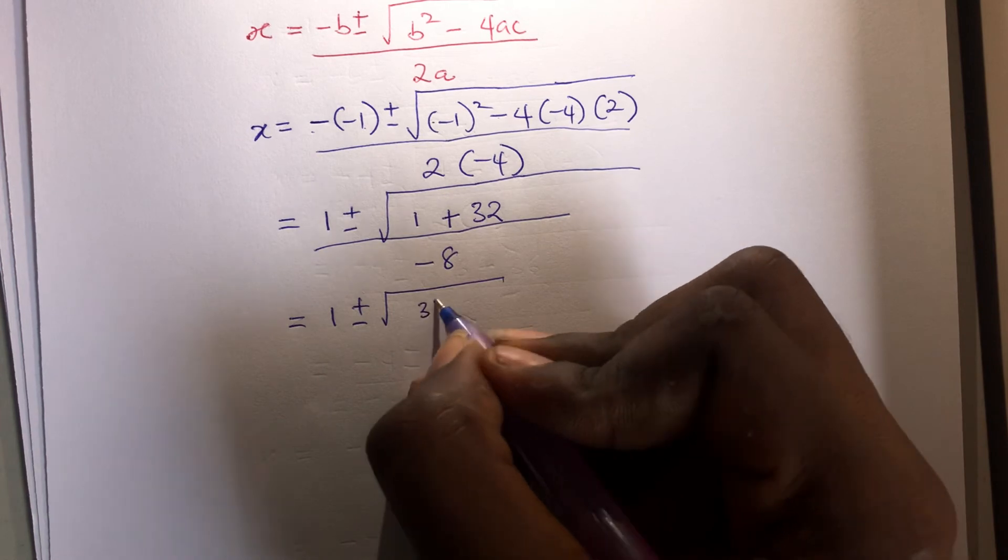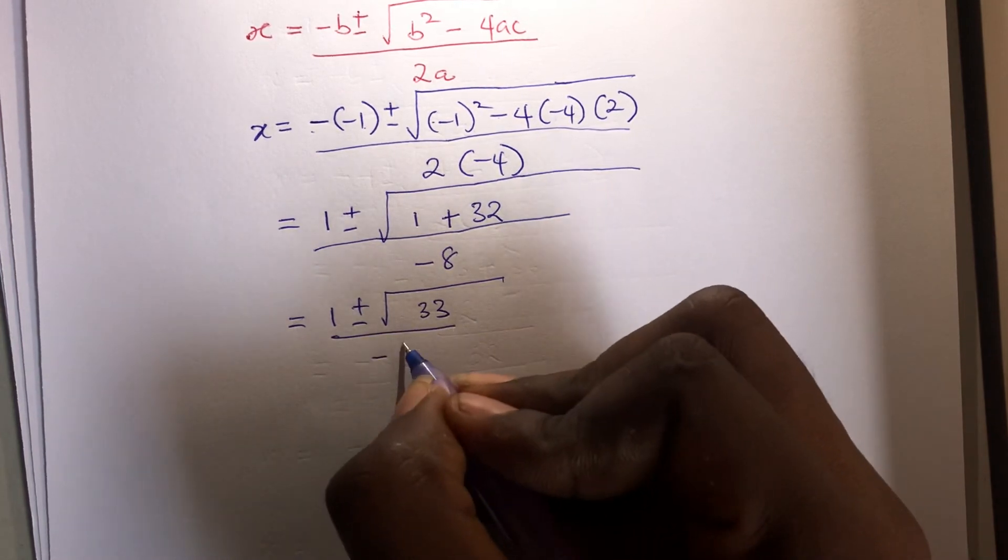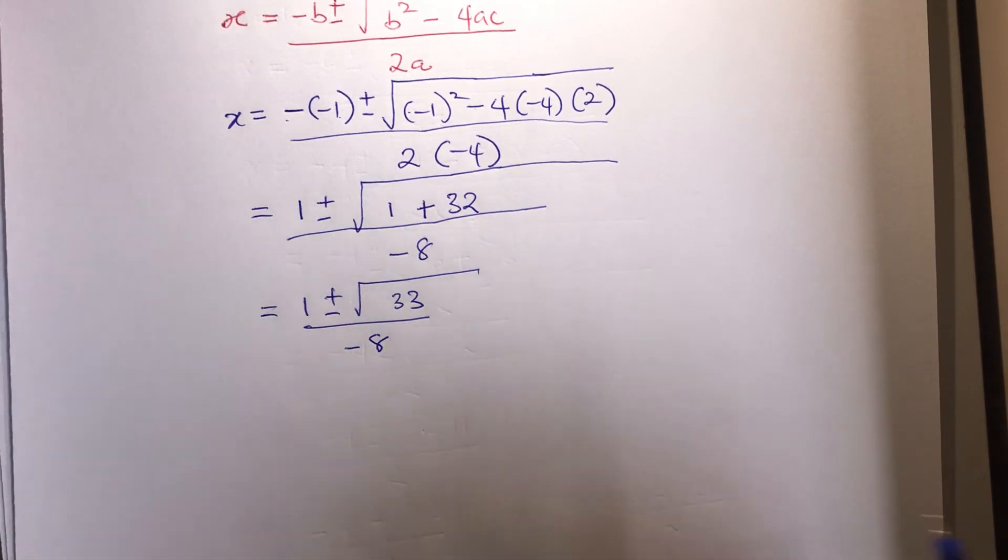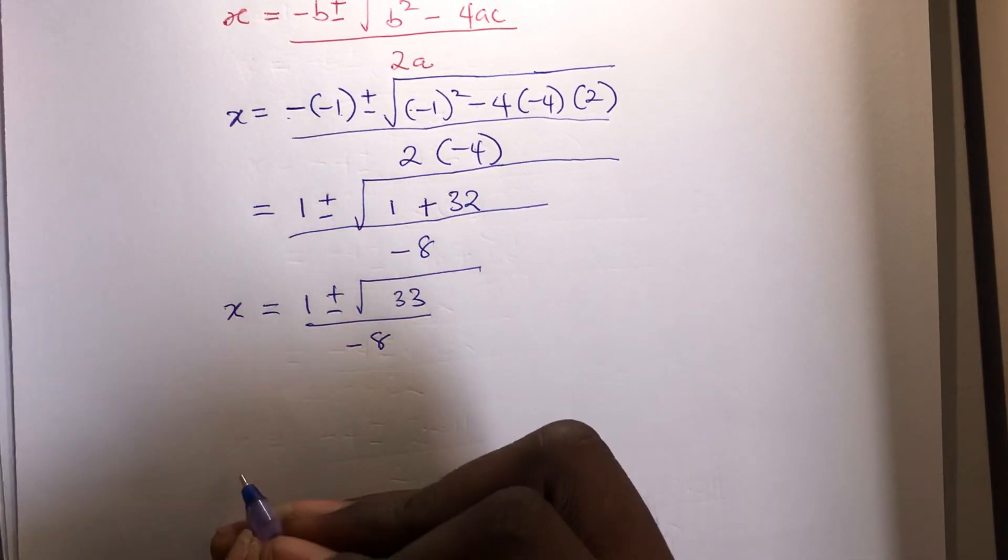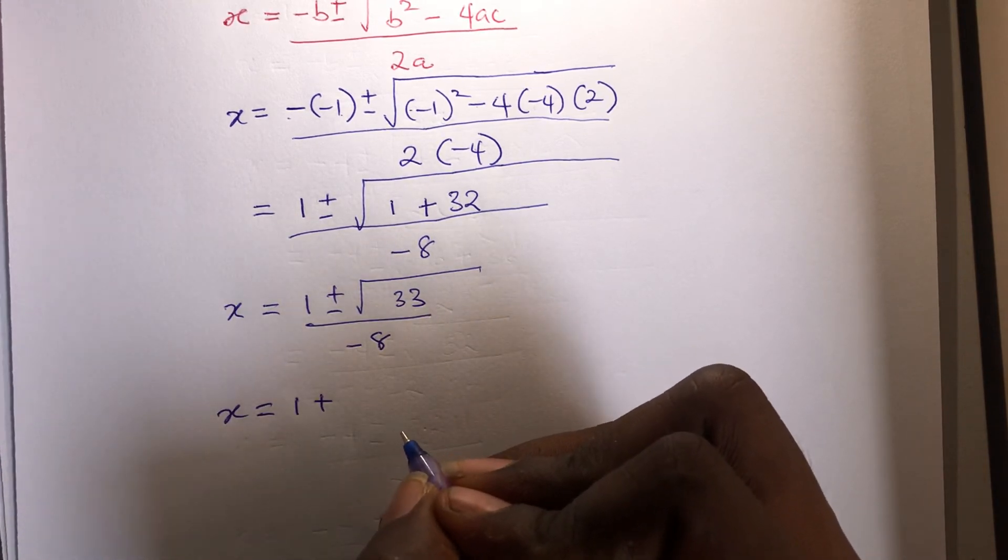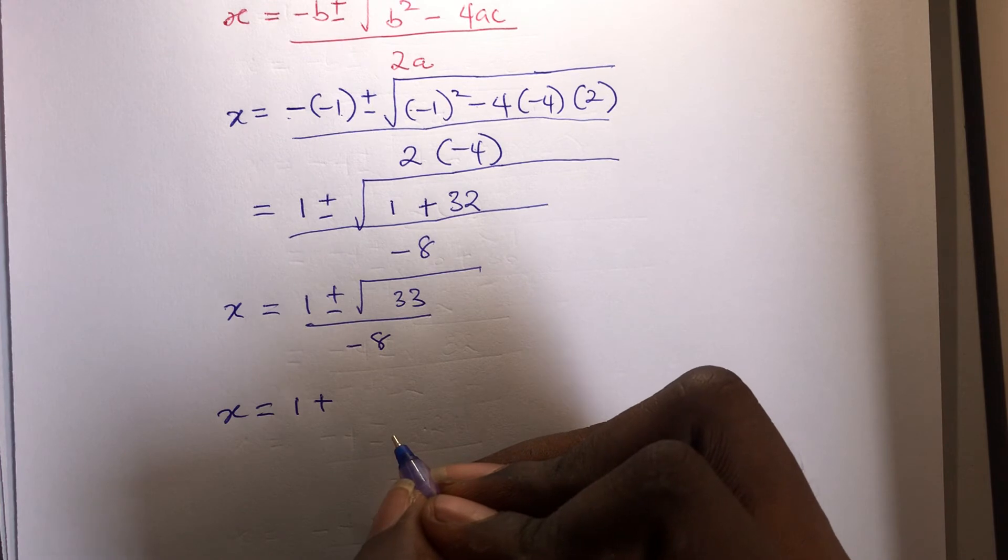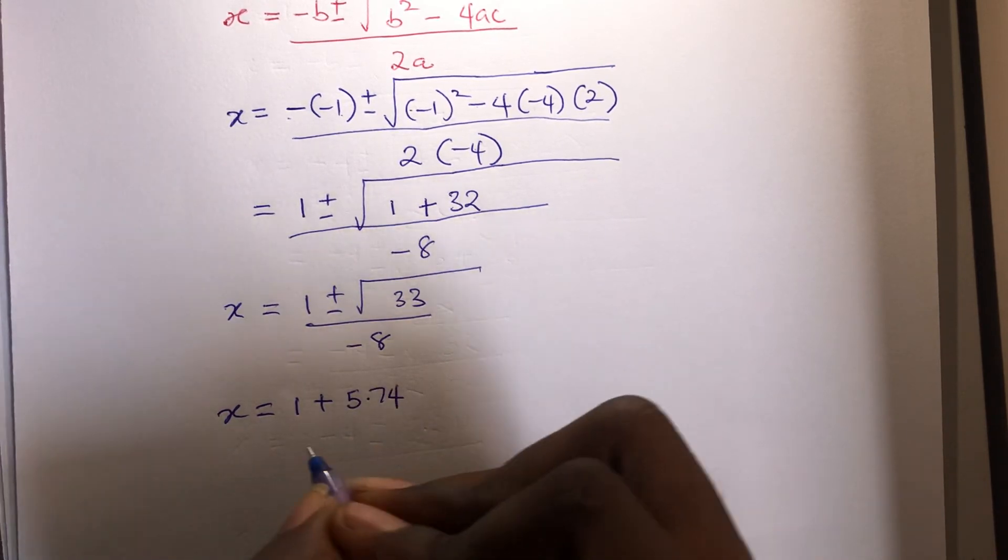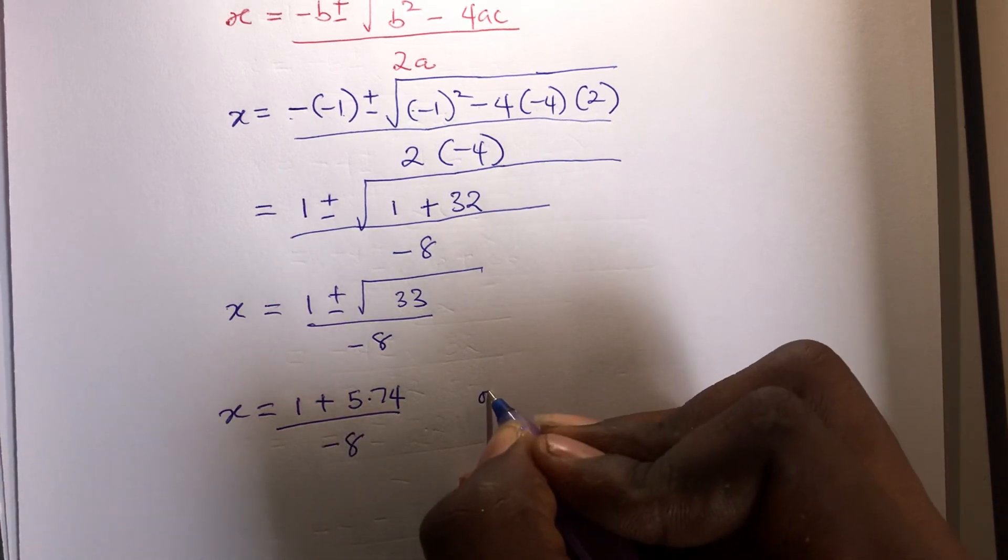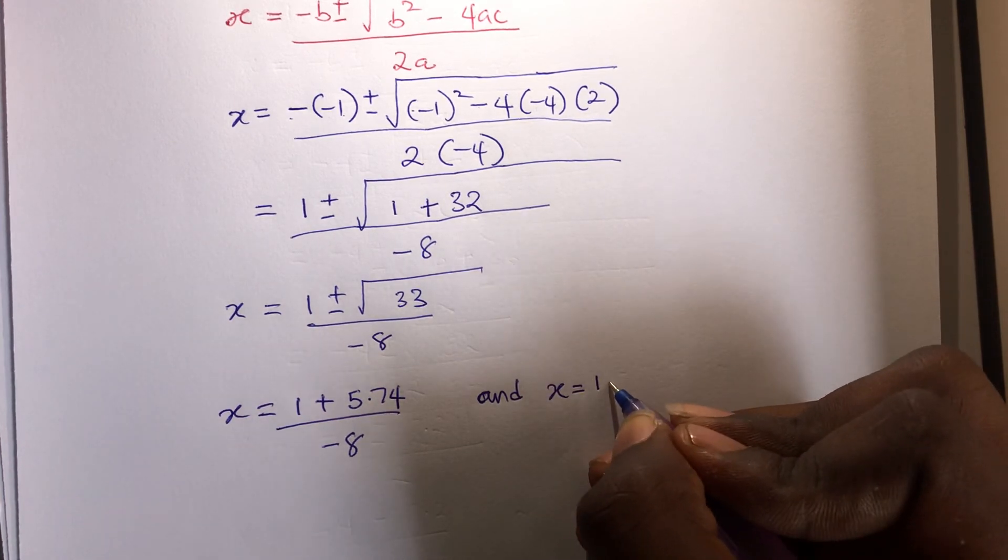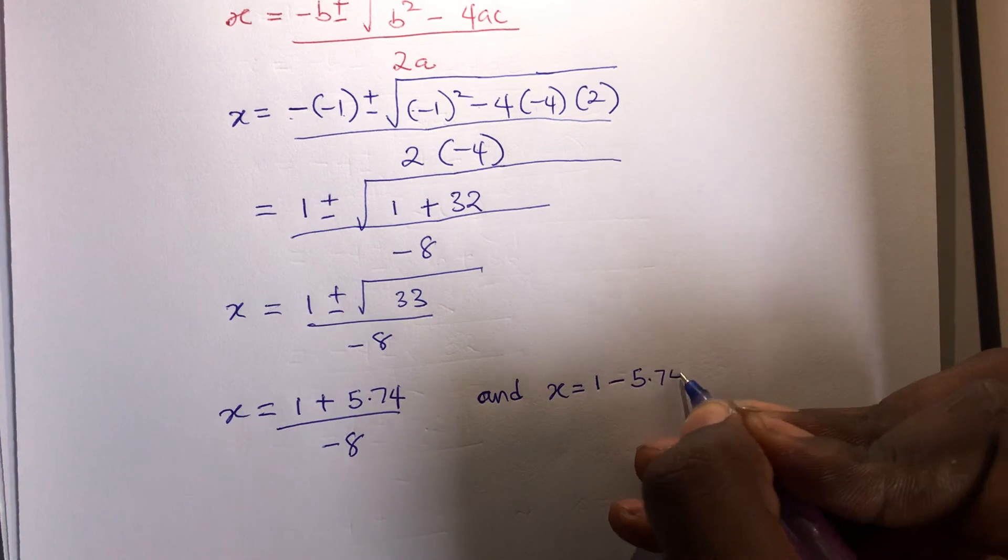So let's continue. We're gonna have 1 plus or minus square root of 1 plus 32 is 33, all over minus 8. Just as we did earlier, plus or minus indicates that we're gonna have two values of x here. So x is 1 plus the square root of 33, which is 5.74, over minus 8. And this time x equals to 1 minus 5.74 all over minus 8.